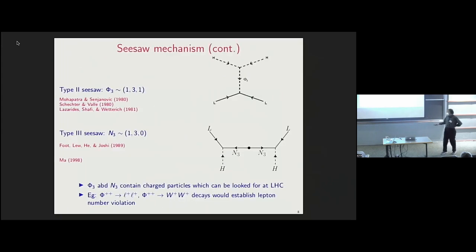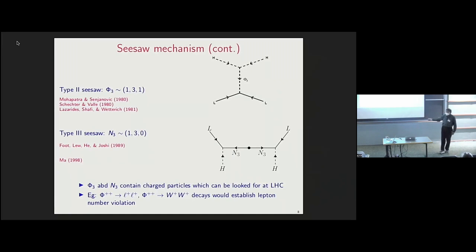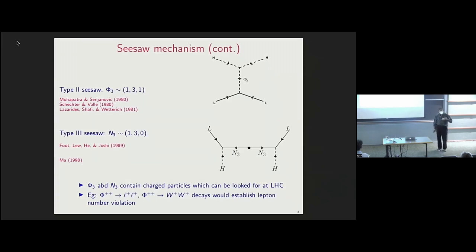There are variants of the type-I seesaw where we replace the mediator particles by either a triplet scalar or a triplet fermion — the effective operator is still the Weinberg operator. For example, in the triplet scalar case, it contains charged particles, specifically a doubly-charged particle, which can decay to same-sign dileptons or to two same-sign W bosons. If we measure both decay modes, we would be establishing that lepton number is violated. To truly establish lepton number violation, you must show two different final states with different lepton number — this would be a good way to establish that the neutrino is a Majorana particle.